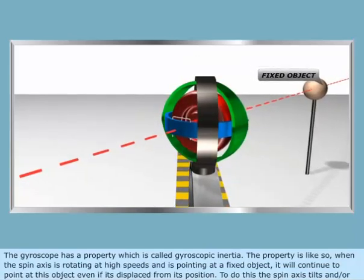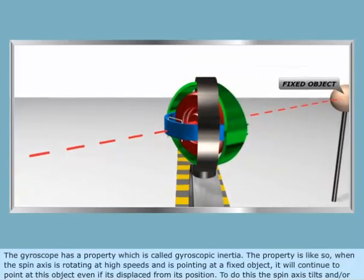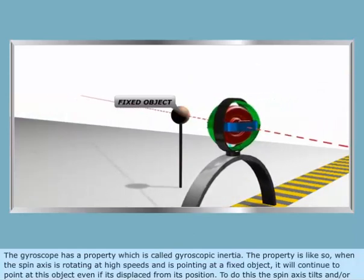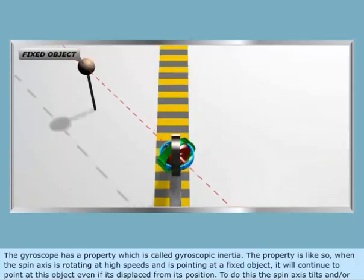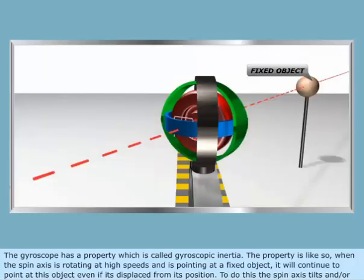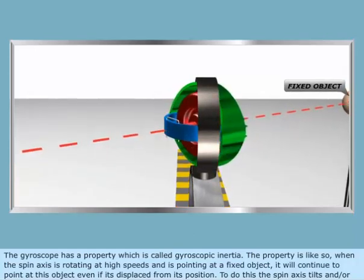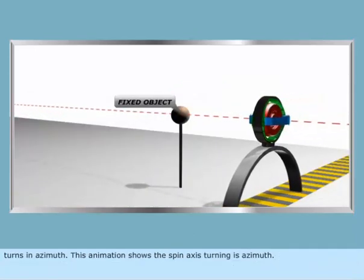The gyroscope has a property called gyroscopic inertia. When the spin axis is rotating at high speeds and is pointing at a fixed object, it will continue to point at this object even if it is displaced from its position. To do this, the spin axis tilts and/or turns in azimuth.